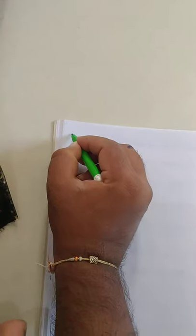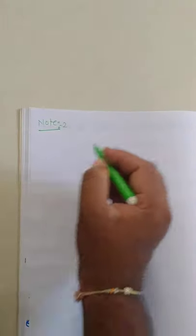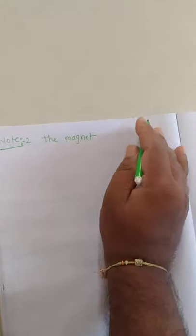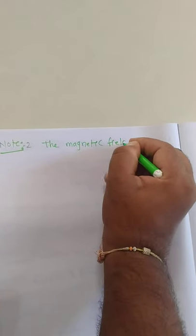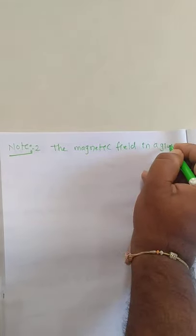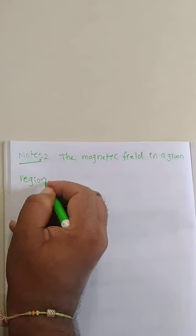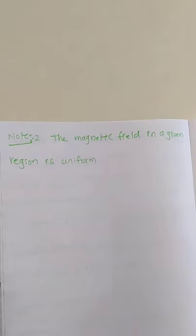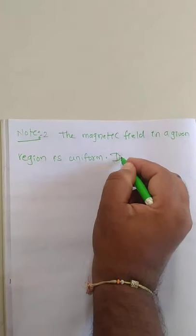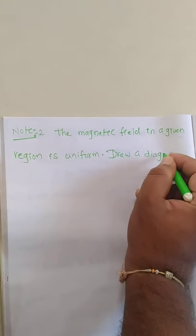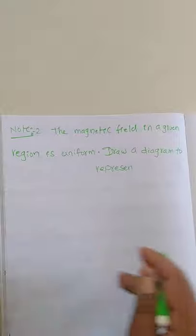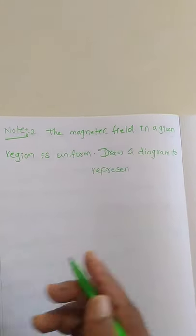Second note point: the magnetic field in a given region is uniform. Draw a diagram to represent it. It means for some region they said the magnetic field is uniform, so we need to represent how to show this in a diagram.